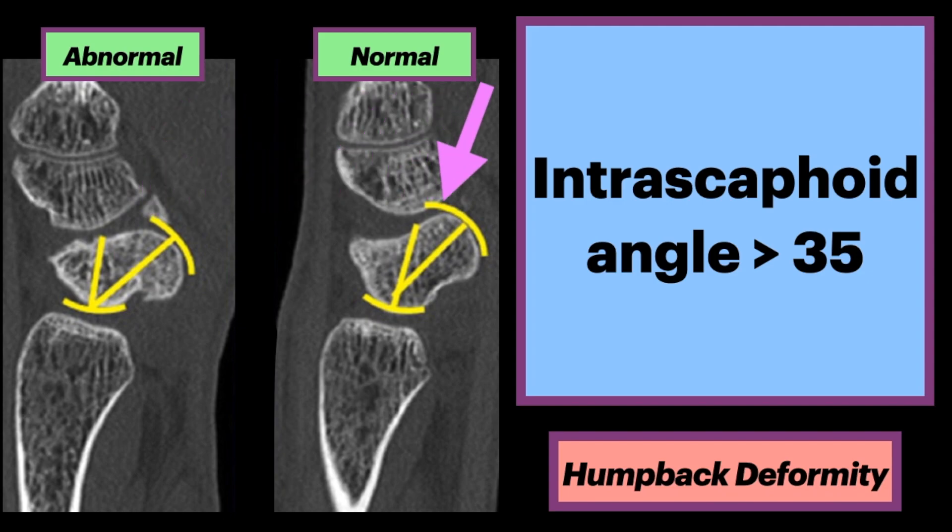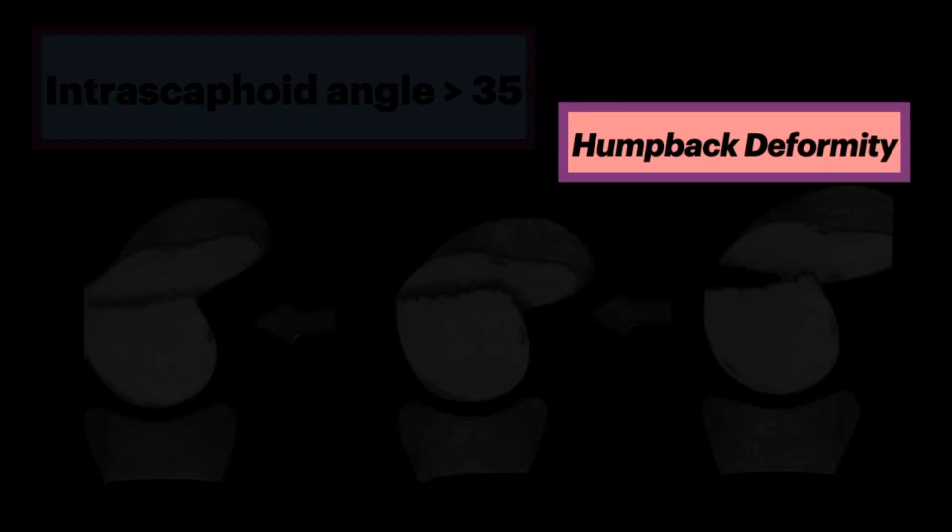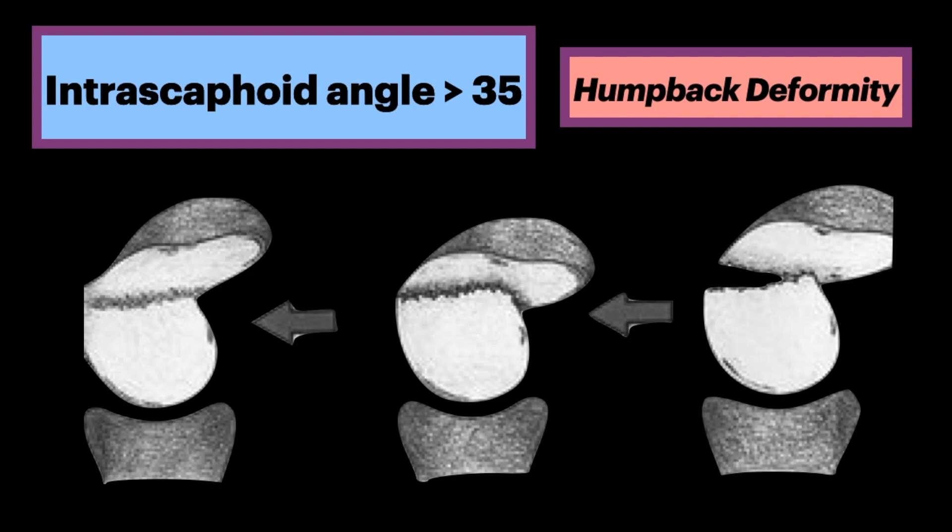Compare this to the normal scaphoid on the right with a decreased angle. This illustration shows the progression of the humpback deformity, whether there is malunion or nonunion after a fracture.